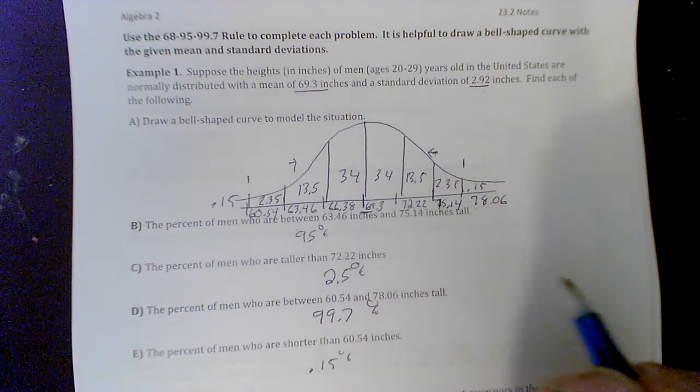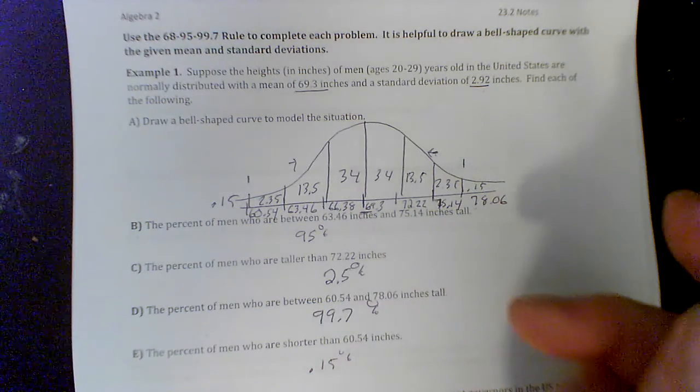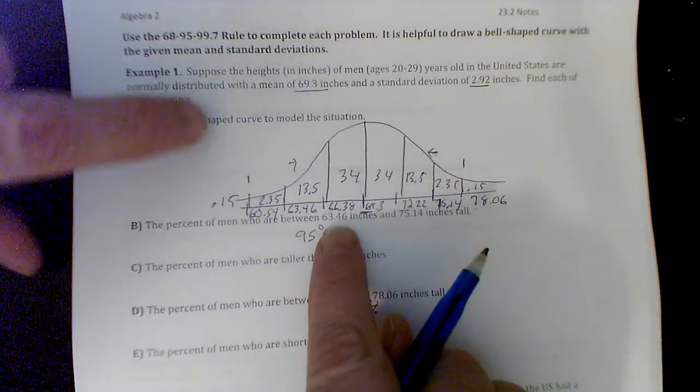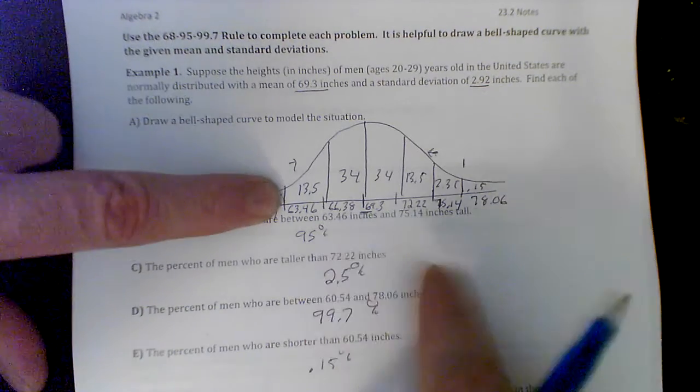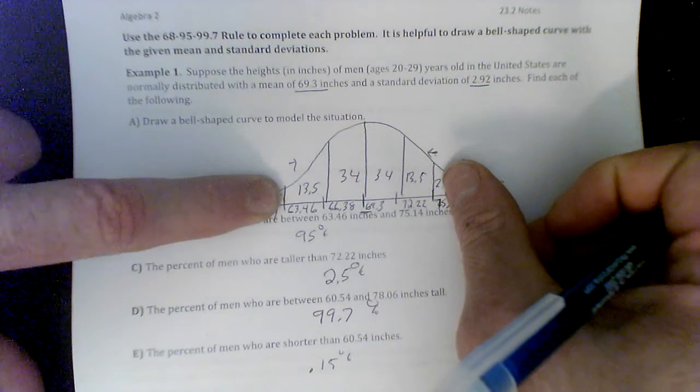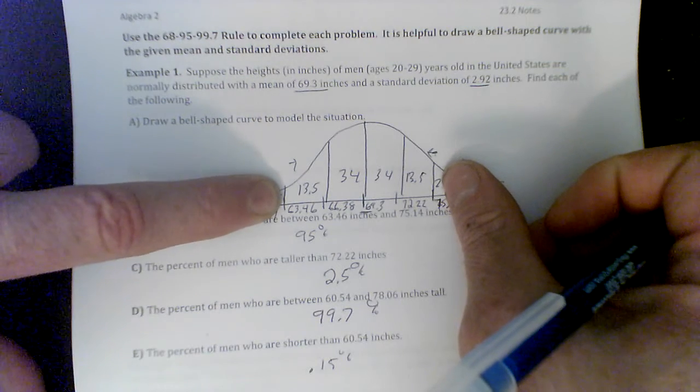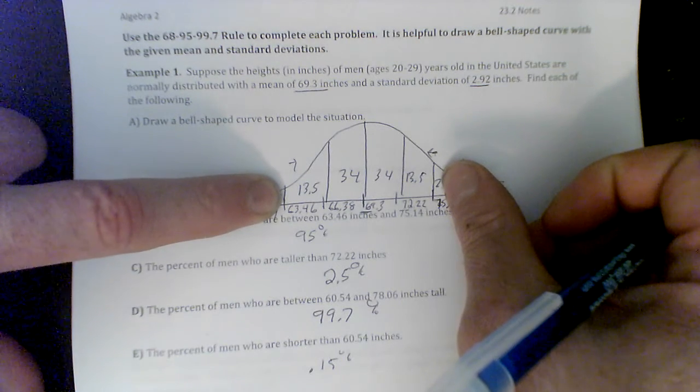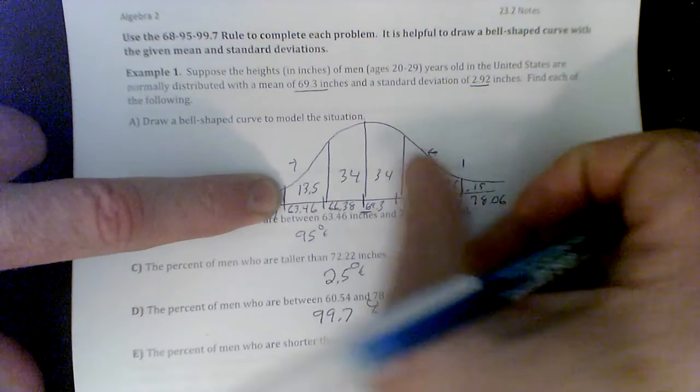Then they'll ask you how many people lie between two points, and you just add them all up. So between 63.46, which is here, and 75.14, which is here, we can see that was where 95% of the data live. So you'd add up all four of these.